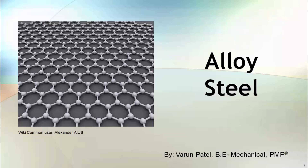When we add various metallic or non-metallic elements in specific amounts to carbon steel, it will change the properties of the carbon steel. We can manipulate this percentage of alloying elements in steel to achieve better properties than carbon steel.